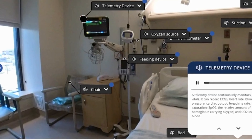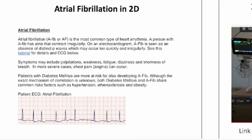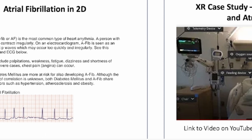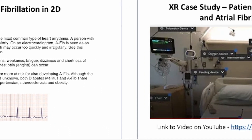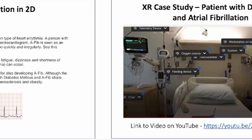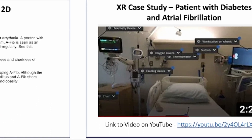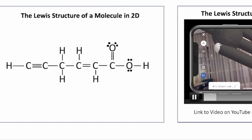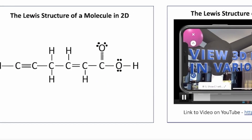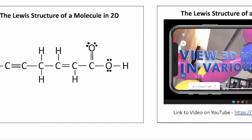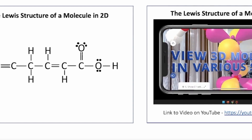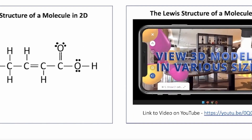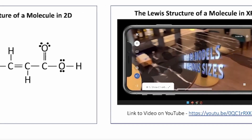Here's an example of before and after implementing EON's extended reality solutions. Before, students were exposed to mostly text and 2D images. Afterwards, the learning content comes alive in contextual environments. In this example, we can see the Lewis structure of a molecule in a 2D image, and after implementing EON's solutions, students are able to view molecules in augmented reality form, scale one to one.